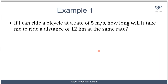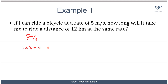Let's try to solve an example. If I can ride a bicycle at a rate of 5 meters per second, how long will it take me to ride a distance of 12 kilometers at the same rate? My speed is 5 meters per second, meaning for every second that passes, I've moved a distance of 5 meters. I have to convert 12 kilometers to a consistent unit: 12 kilometers equals 12,000 meters.